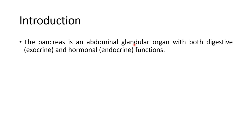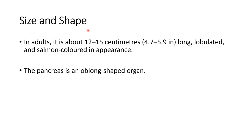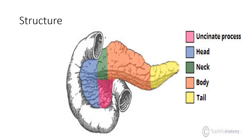Write an introduction in one or two sentences. Pancreas is an abdominal glandular organ with digestive (exocrine) and hormonal (endocrine) functions. For the size and shape of pancreas, it is about 12 to 15 cm long, lobulated, and salmon-colored in appearance, with an oblong shape. You have to draw the structure of pancreas, which has a tail, a body, the neck, head, and the uncinate process.